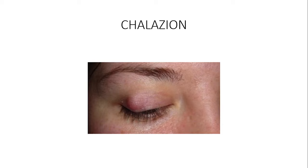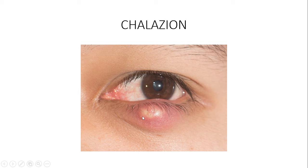For steroid injection, we use triamcinolone — injected into the growth. It works against the inflammatory cytokines produced by the growth. If the steroid doesn't help within days to a week, you can repeat the steroid injection. Steroids are also specifically used when the growth is close to the punctum, because an inexperienced surgeon could distort the anatomical architecture of the punctum and destroy tear flow and drainage.